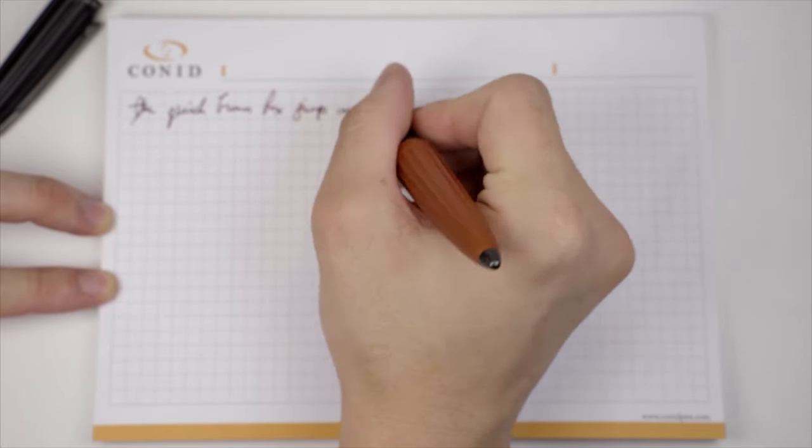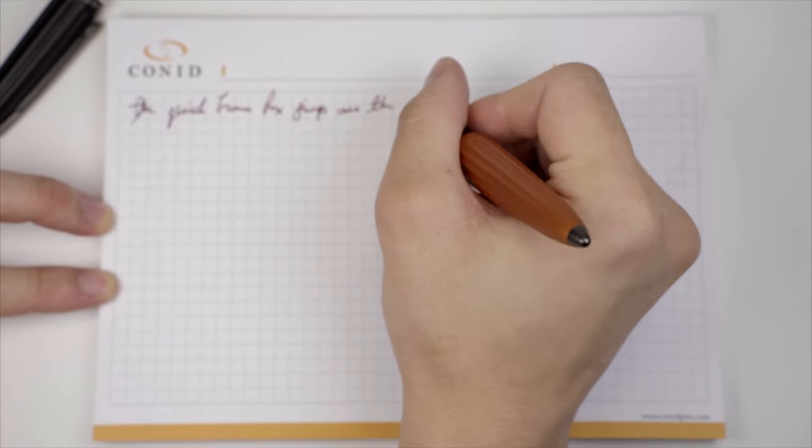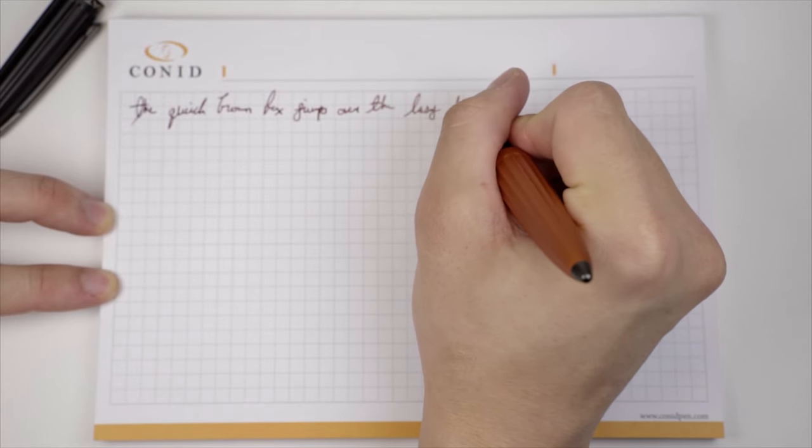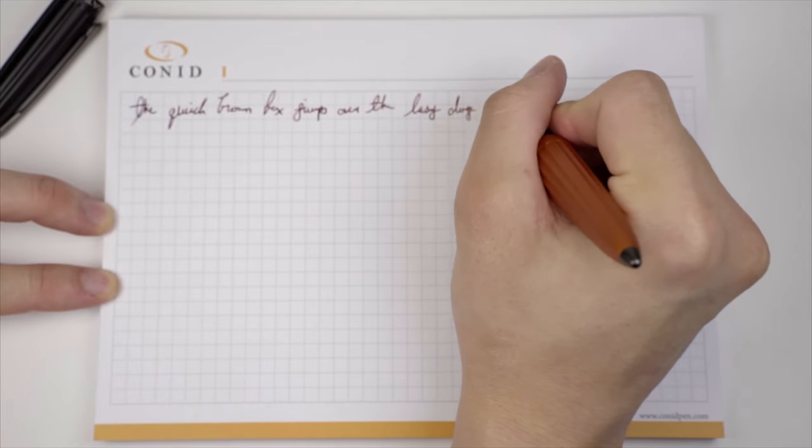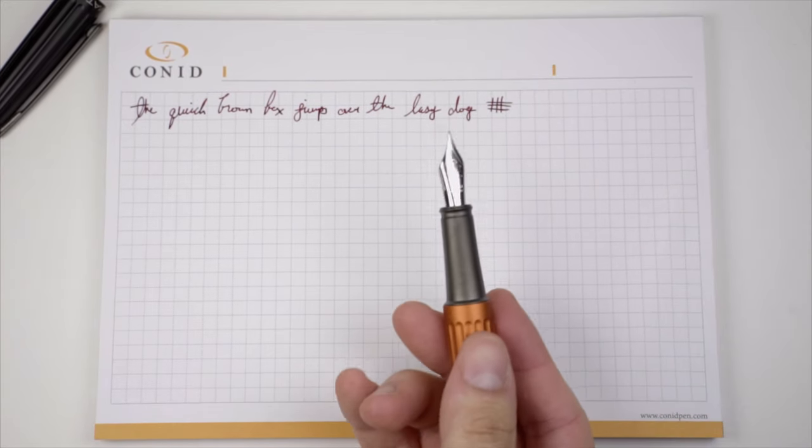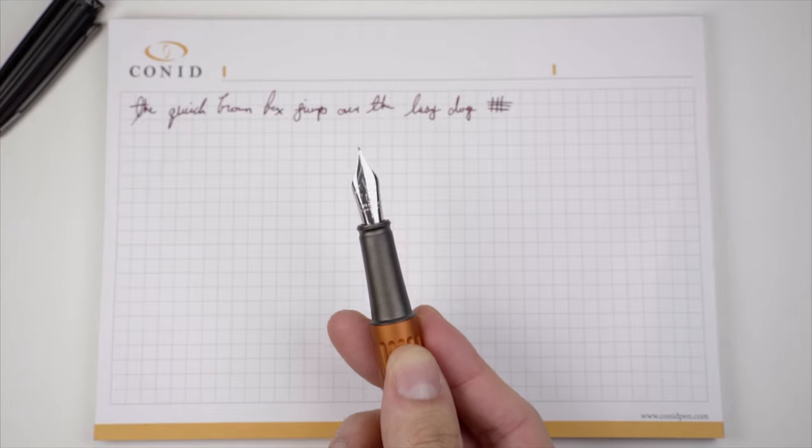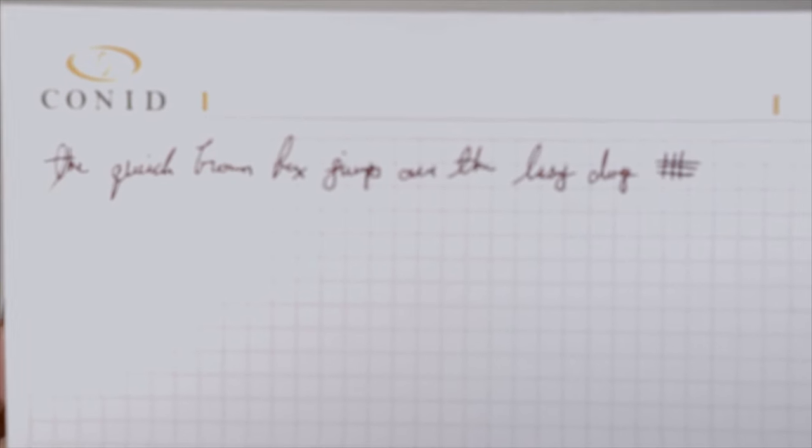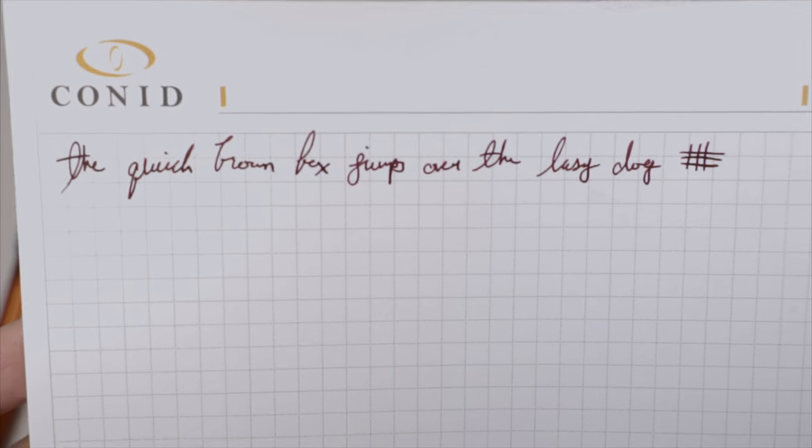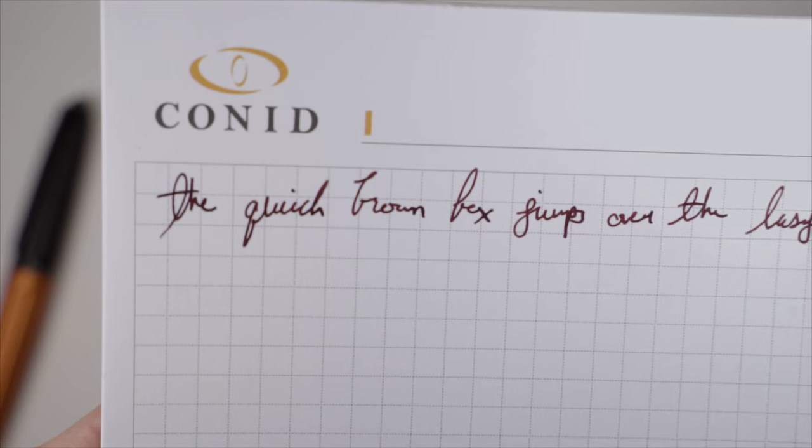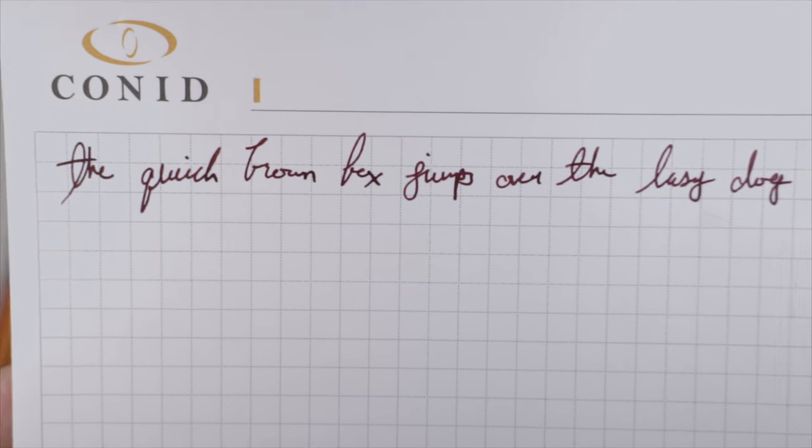This nib is a fine and it's so buttery smooth, with hardly any feedback. The flow is on the slightly wetter side but I wouldn't say it's very wet. Flow is consistent and smooth. The nib is stiff with hardly any give. The pen is currently inked with Diamine Oxblood. As you can see from the close ups, the line width is about average for a European fine.